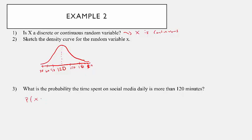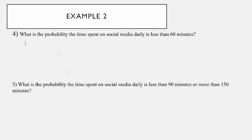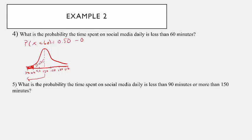What is the probability that the time spent is greater than 120 minutes? That's just greater than the mean, so the area above the mean is 0.50, or 50%. Next: what is the probability that the time spent on social media is less than 60 minutes? Drawing the density curve centered at 120, with values 150, 180, 210, 90, 60, and 30 marked, we want the area less than 60. That's two standard deviations below the mean, so the area from 60 to 120 is 0.475. It's 0.50 minus 0.475, which gives 0.025.